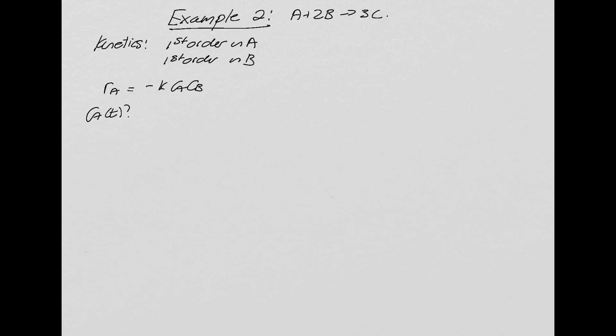What we see is the rate depends on both A and B, and so we're going to have to find a relationship between them. What we need to know is what the feed composition is, and so let's say initially we fill up with 1 mole of A and 2 moles of B. In other words, we put in stoichiometric quantities of A and B.